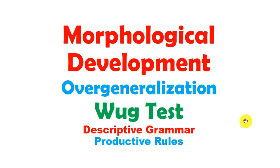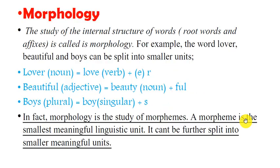In the previous video we already discussed the acquisition of native language phonology, and this video is about the acquisition of morphology. What is morphology? Morphology is the study of the internal structure of words — root words and affixes. For example, the words 'lover,' 'beautiful,' and 'wise' can be split into smaller units.